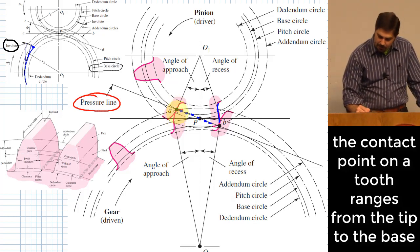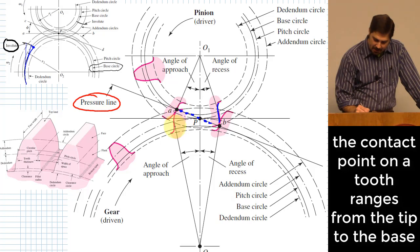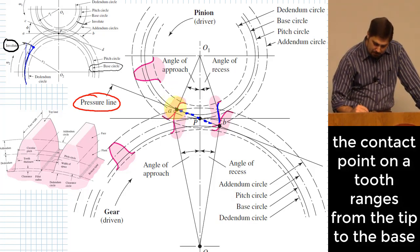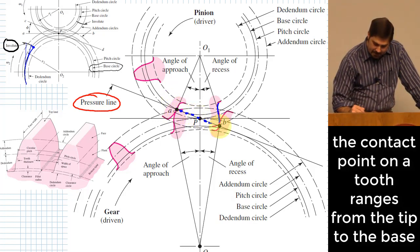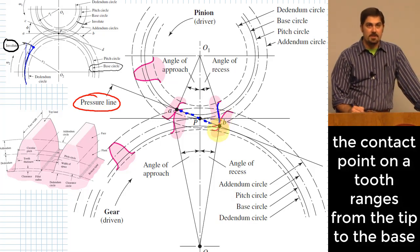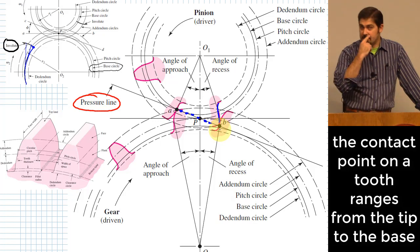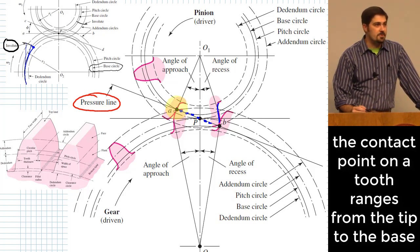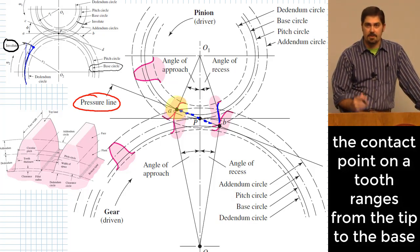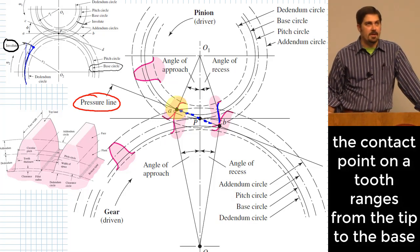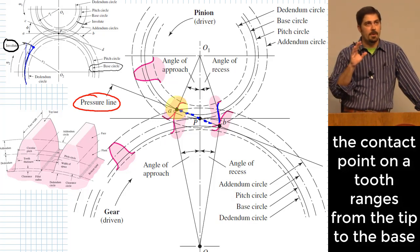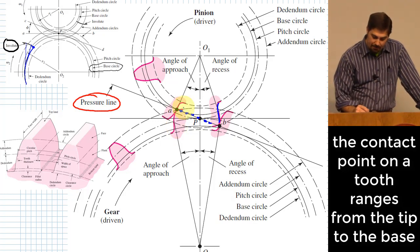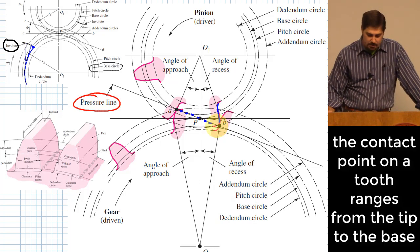When a tooth begins to make contact, the forces are applied right at the tip of the tooth. As the tooth moves through its contact, the contact point moves further toward the base of the tooth. Being out at the tip is worse for bending stresses in the tooth. As far as bending goes, the further out on the tooth you are, the worse it is — but through part of the motion it moves inward toward the base.